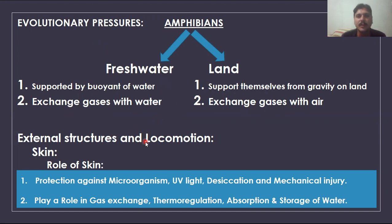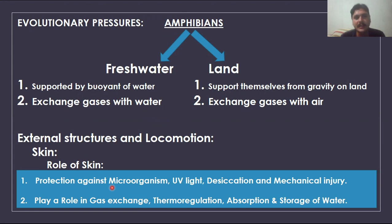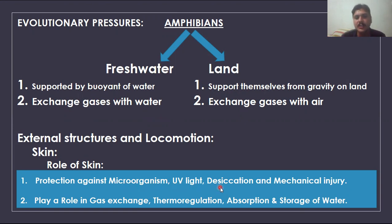External structure and locomotion will be our main topic in this introduction. First, the skin is the outermost covering of the body. What is the role of the skin in amphibians like salamanders, caecilians, frogs, and toads? The skin protects the body from microorganisms, UV light, desiccation, and mechanical injury. These are different factors that can damage the body of amphibians, but the skin plays a protective role.